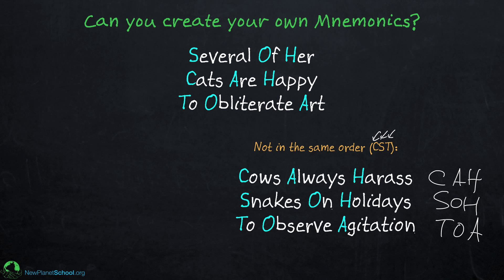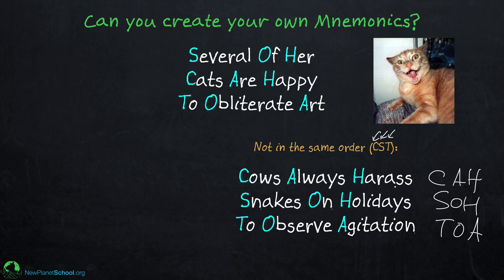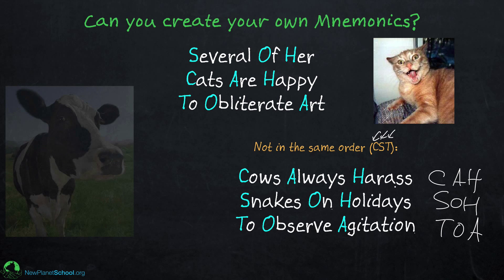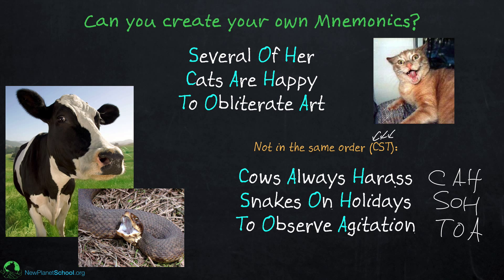If you can remember one of these funny sentences, you should do that. Come up with your own — something you can really picture, something connected with your life or something funny. Like the crazy cat obliterating art, or the cow harassing the snake on Christmas. Try to come up with something that's easy specifically for you to remember — it doesn't matter what I can remember, it matters what you can remember. And then you will never forget.